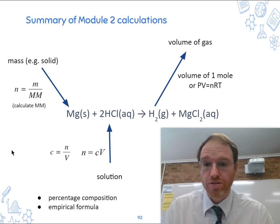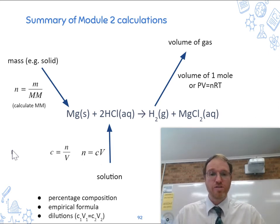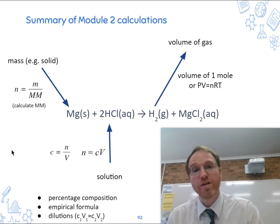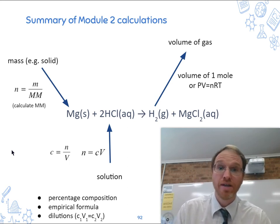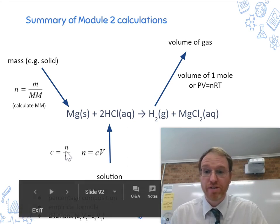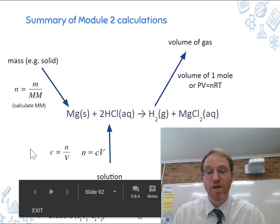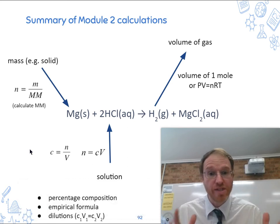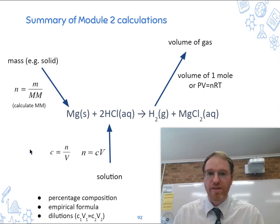And lastly, dilutions of solutions. And that's simple. We know the number of moles before is the same as the number of moles after. And when you use C equals n on V, you plug that in, you end up with C1V1 equals C2V2. So you need to be able to use that for dilutions, avoiding all the tricks that are there.